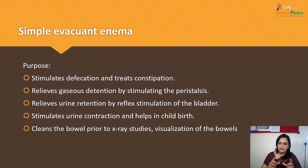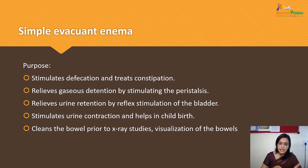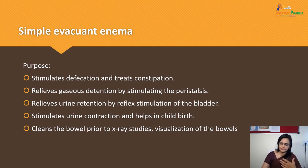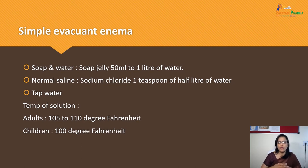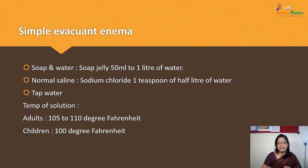Simple evacuent Enema is used for special purposes either for diagnosis or to carry out surgical procedures. The solutions used include soap and water — soap jelly 50 ml to 1 liter of water — and normal saline (sodium chloride), 1 tablespoon per half liter of water. The temperature for adults is 105 to 110°F, and for children it is 100°F.